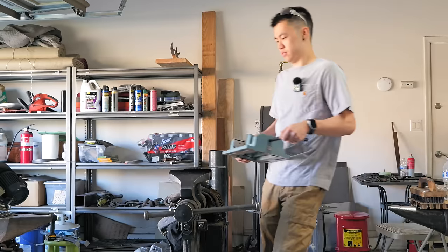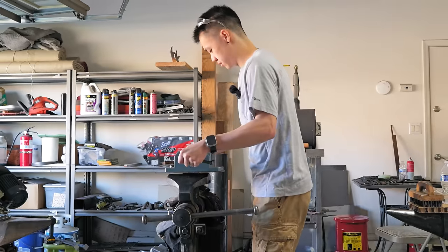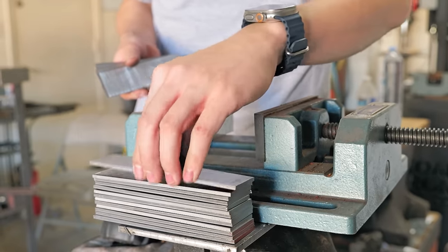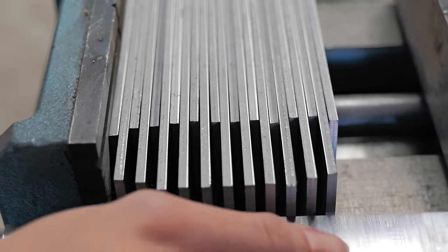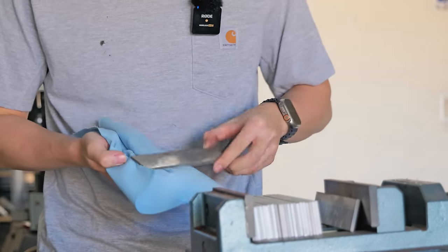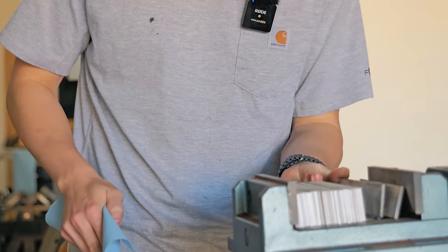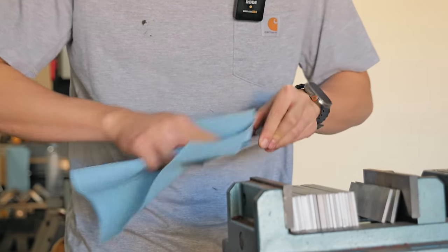Today we're going to be building another Damascus chef's knife, but today the pattern isn't random. It's actually something called Firestorm Damascus. Firestorm Damascus sounds really complicated, but it's actually sort of just a variation of Twist Damascus. Rather than twisting straight layers, we twist something called Crush Ws.